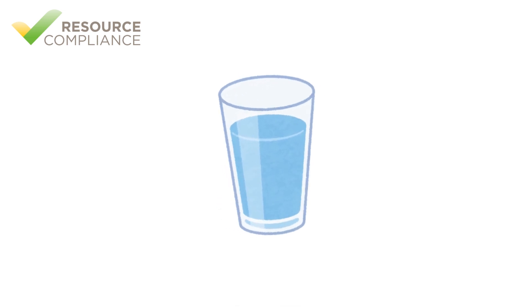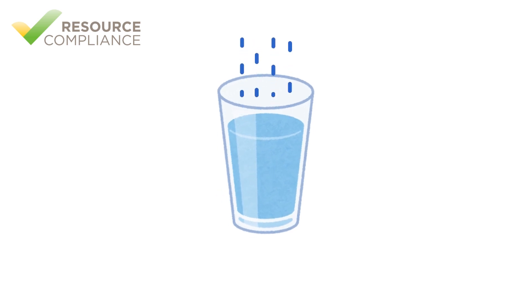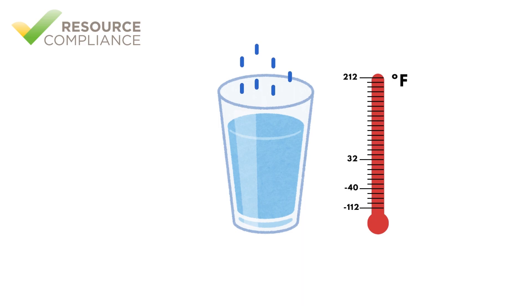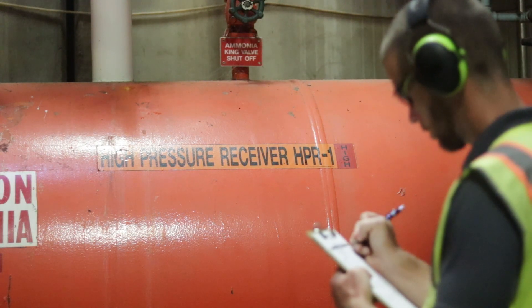When a substance changes state from a liquid to a vapor, the process occurs at a constant temperature. When this occurs in a refrigeration system, we call the refrigerant saturated.